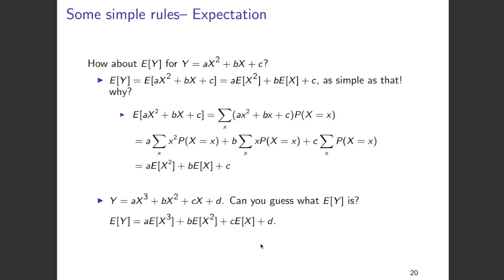Following the same logic for a cubic case where y involves x to the power of 3, the expectation of y is going to be a times expectation of x cubed plus b times expectation of x squared plus c times expectation of x plus d. What we understand here is that the expectation of a sum of random variables is simply the sum of their individual expectations. y is a sum of random variables — x cubed, x squared, x — plus a constant d, and expectation of y is nothing but their summed expectations.